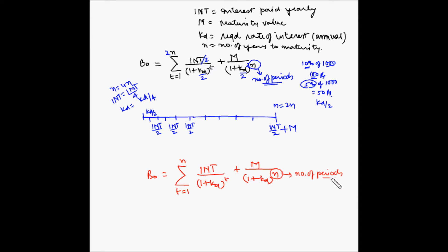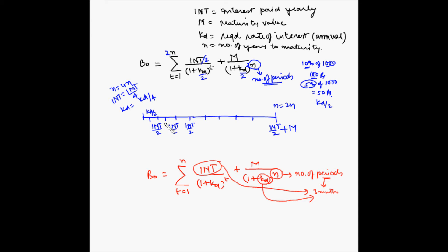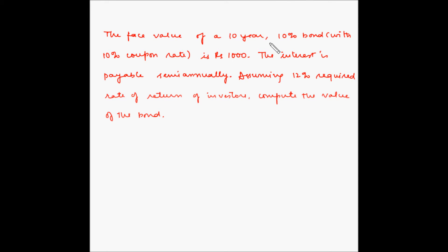For a quarterly interest paying bond, a period is defined as 3 months. If interest is given in yearly format, convert it to quarterly format. If KD is given yearly, convert it to quarterly as well. That way you only need to remember one formula and logically enter the values for interest, rate of return, and number of periods.